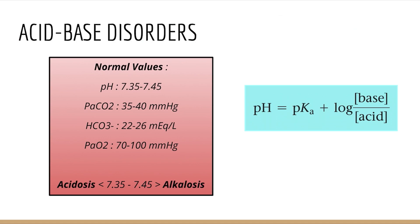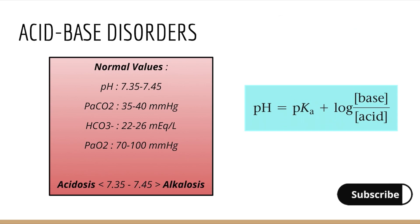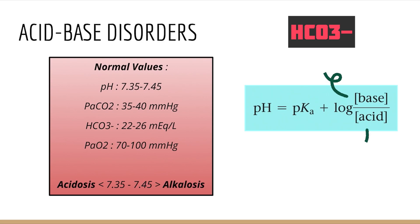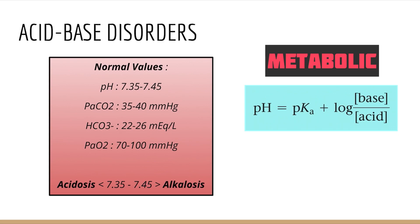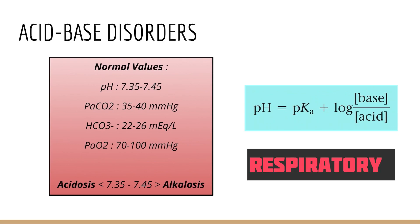The normal values are: pH 7.35 to 7.45, PCO2 35 to 40 mmHg, and bicarbonate 22 to 26 mEq/L. Anything below 7.35 is acidosis and anything above 7.45 is alkalosis. In the equation, base is bicarbonate and acid is carbon dioxide. Anything related to bicarbonate is a metabolic process and anything related to carbon dioxide is a respiratory process.